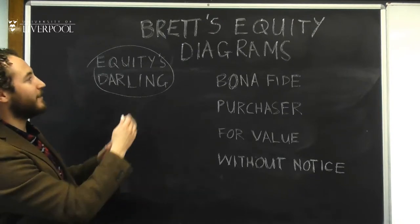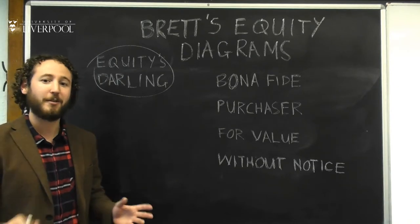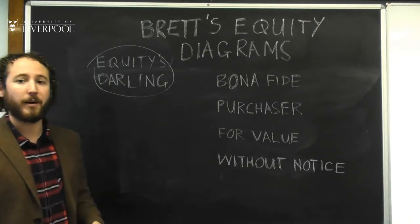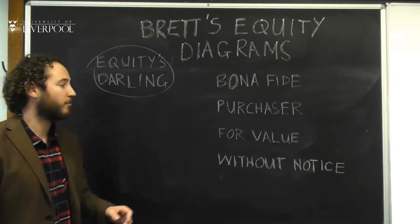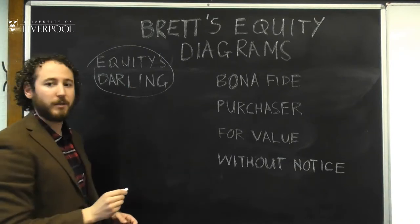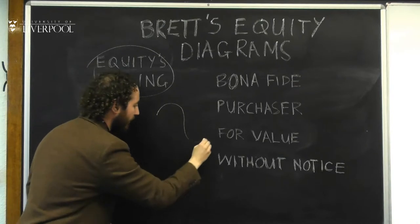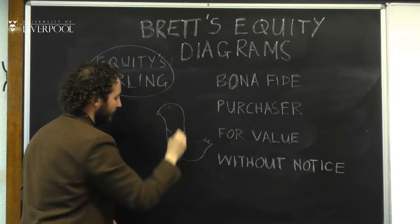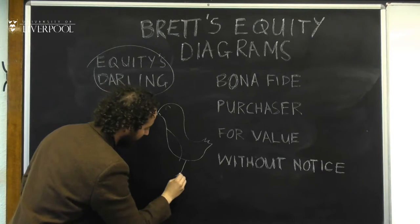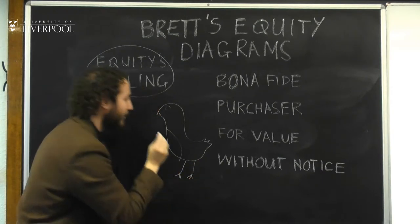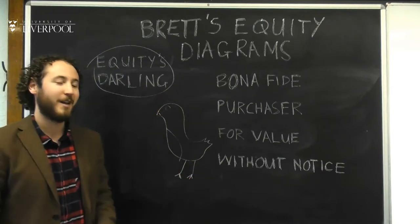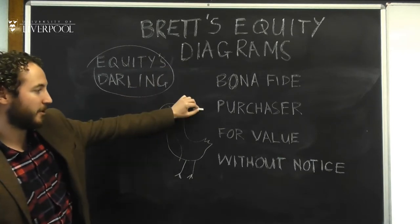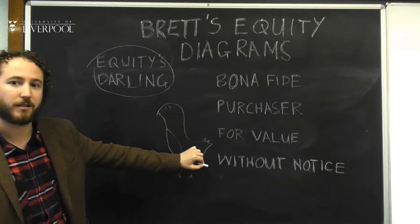Because these are Brett's equity diagrams, I'm going to draw a diagram the way that I always remember a darling of equity. For some reason, in my head, when I think of an equity's darling, I get the image of a bird. So that's the diagram for this video. And a darling of equity is a bona fide purchaser for value without notice.